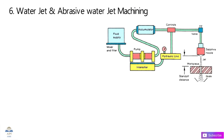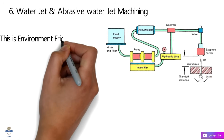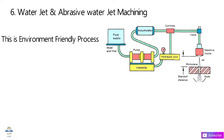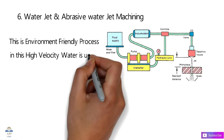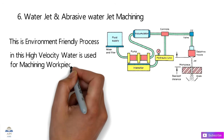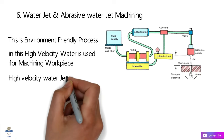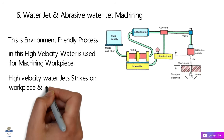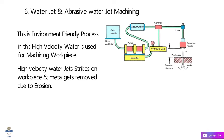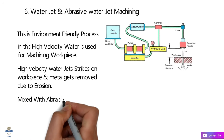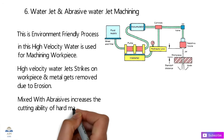The next process is Water Jet and Abrasive Water Jet Machining. This is an environment-friendly process because water is used. High-velocity water jets strike the workpiece and metal is removed due to erosion. Sometimes abrasive particles are mixed in to increase efficiency and improve the cutting ability on hard materials.